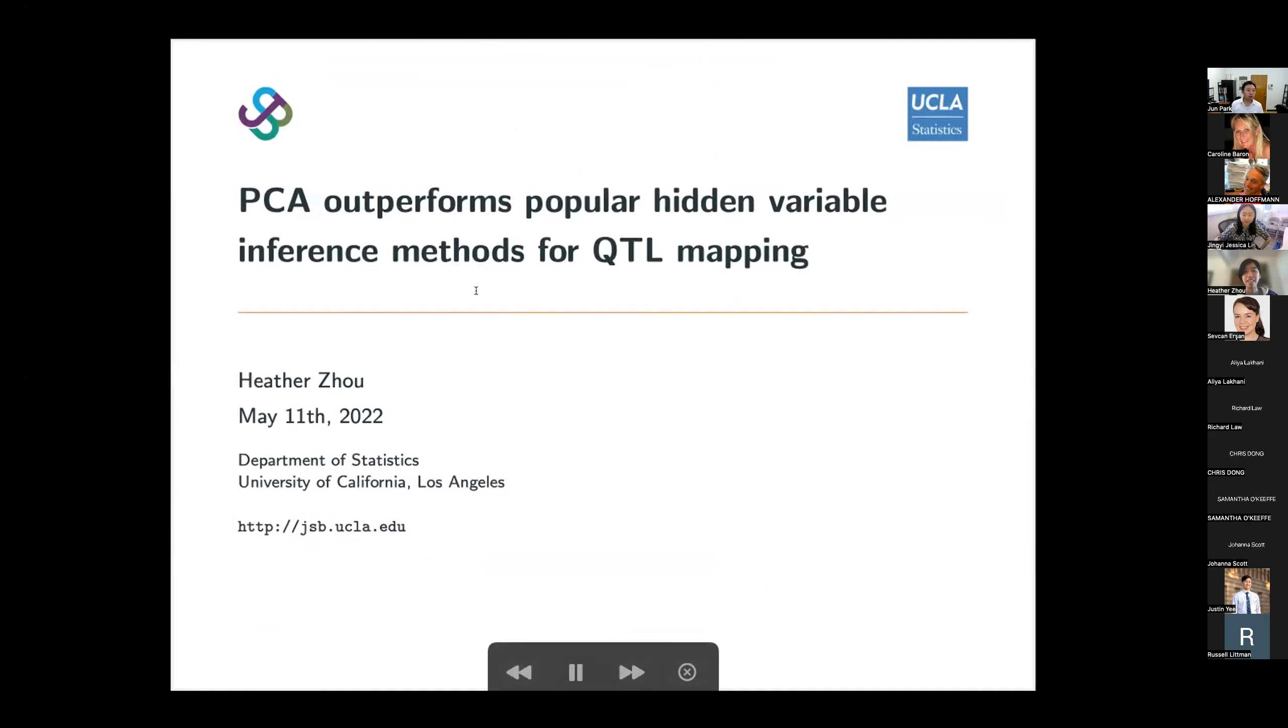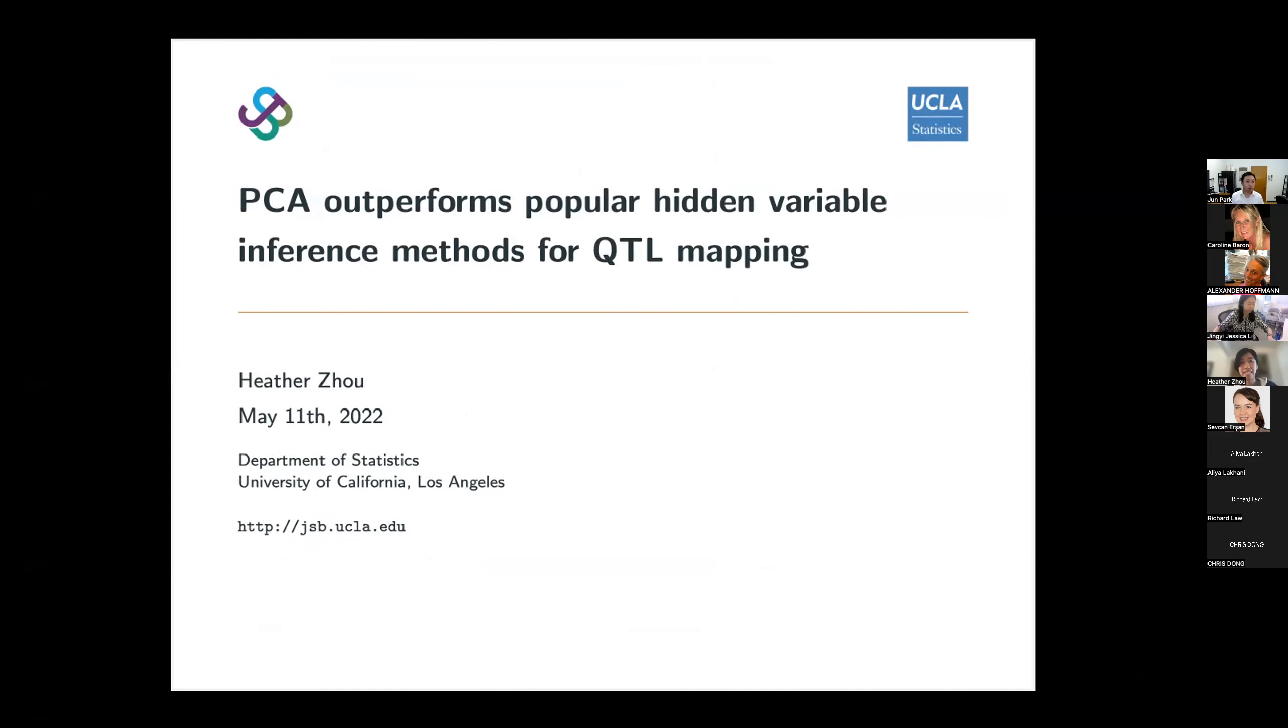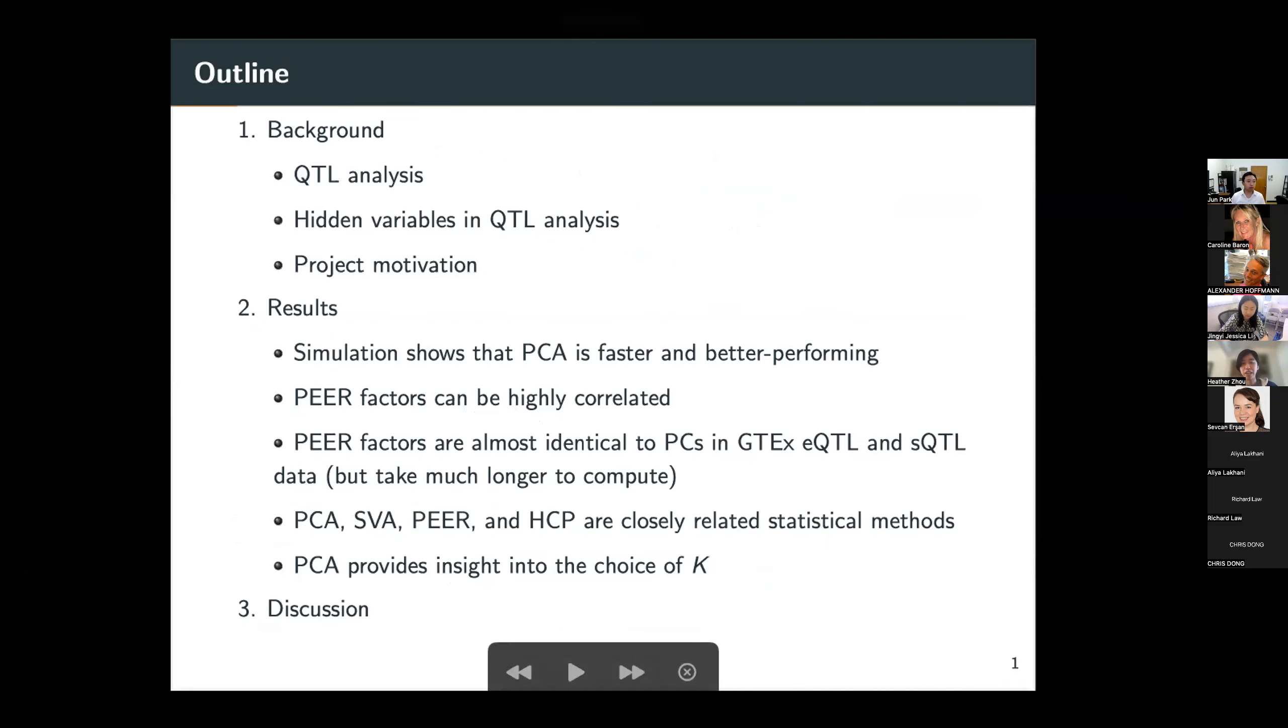So as Jessica was talking about, our finding in one sentence is that PCA outperforms popular hidden variable inference methods for QTL mapping. And I will give a brief introduction to the background of QTL analysis, and then go over our main results.